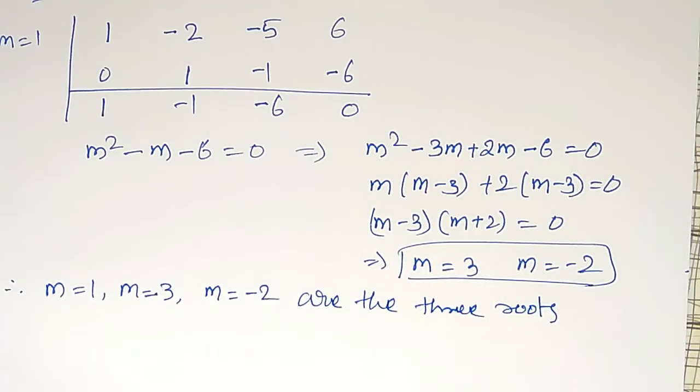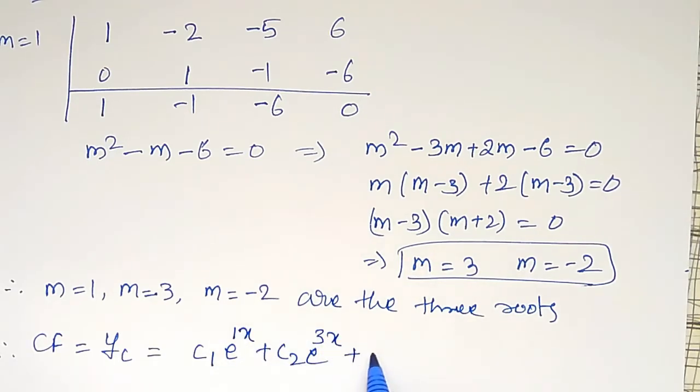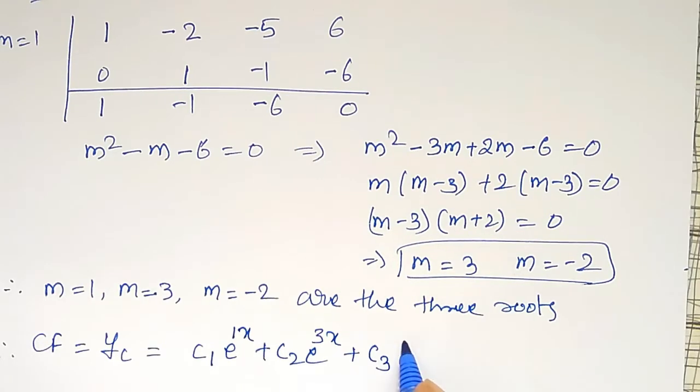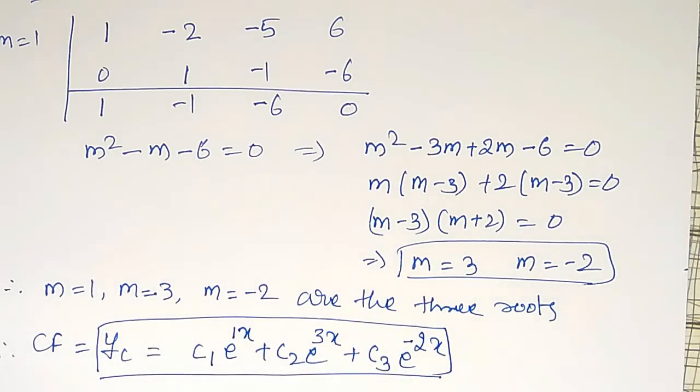Three roots of the given equation. As third order is there, three roots you should get. Now, all the three roots are distinct. Therefore, CF equal to, I can write it as, yc = c₁e^(x) + c₂e^(3x) + c₃e^(-2x). All the three roots I am using here. This is the required solution of the differential equation.